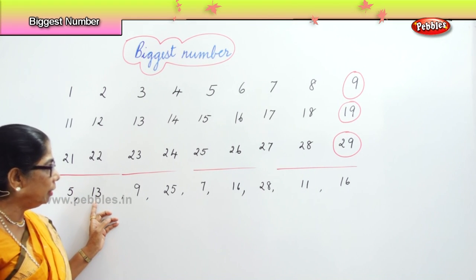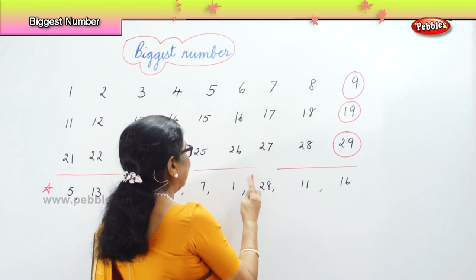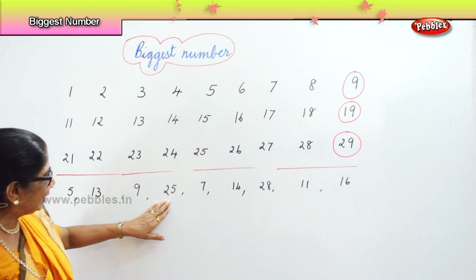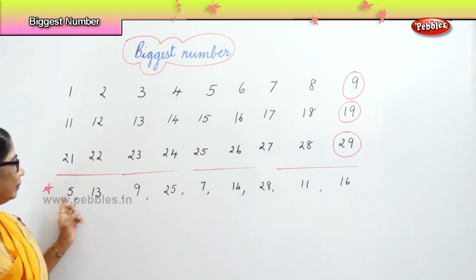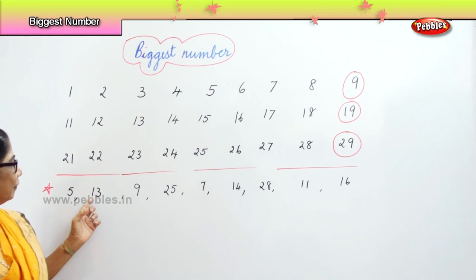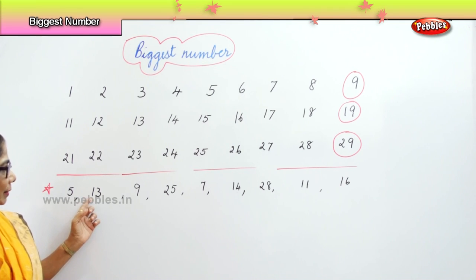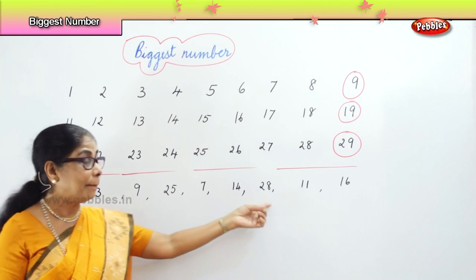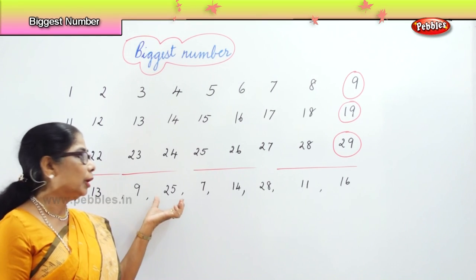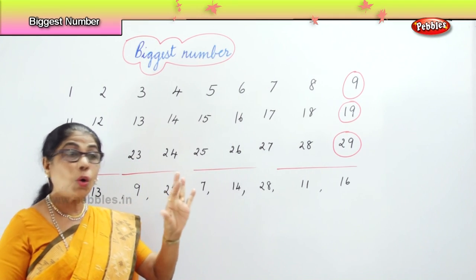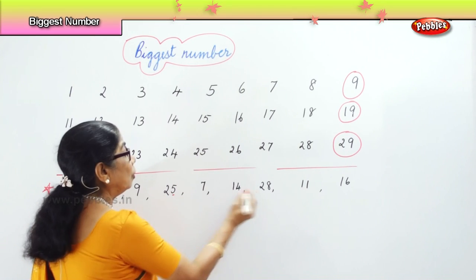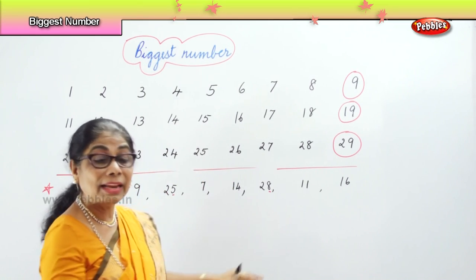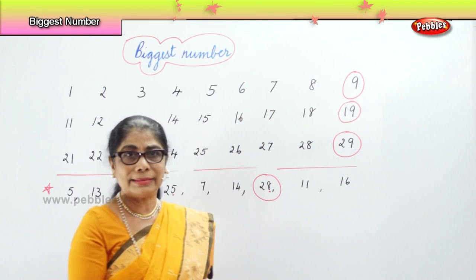We have single digit numbers: five, nine, seven. Then we have double digits with first number one: thirteen, eleven, sixteen. And in the twenties we have twenty-five and twenty-eight. Single digits are definitely not the biggest. Among the doubles with first number one, they are smaller than the twenties. Now you look at two in the first place — we have twenty-five and twenty-eight. You must look at the second number: is it five or is it eight? Five, six, seven, eight — so twenty-eight is the biggest number.